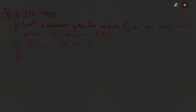IN ADDR is a two-byte instruction: one byte for the opcode fetch and one byte for the 8-bit address. It has three machine cycles: the opcode fetch machine cycle, the memory read machine cycle, and the IO read machine cycle.